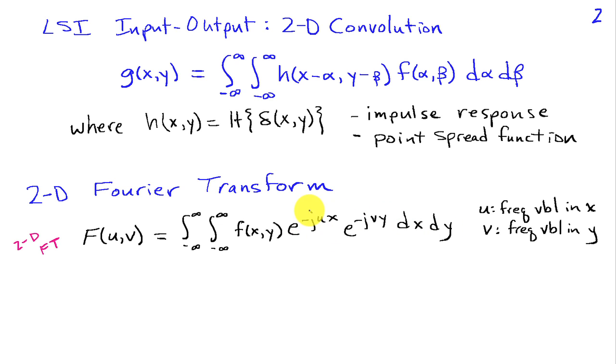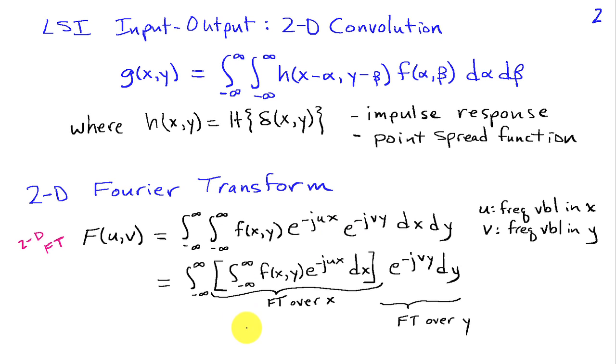So we can think about this as a complex sinusoid with frequency u in the X coordinate, and here we have another complex sinusoid with frequency v in the Y coordinate. Now the 2D Fourier transform can be interpreted by grouping terms here, as I've done in this second line, and we see that it consists of a Fourier transform taken over X for all Y,